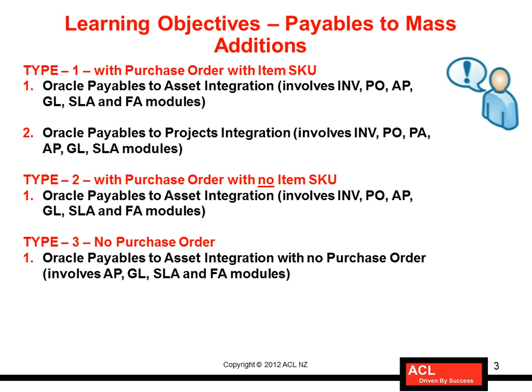Then comes Type 2 — a flow wherein you have a purchase order but no item SKU, so you proceed by item description only. Oracle doesn't restrict users from acquiring assets whether or not an item is defined in Oracle, which is an advantage. The flow is pretty much similar to Type 1, but you simply go by description rather than item SKU.